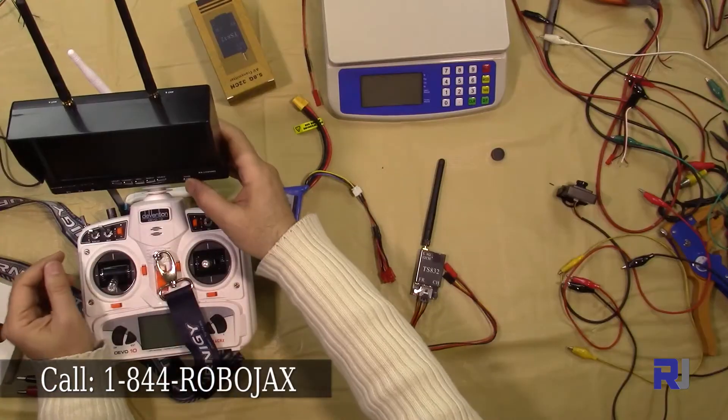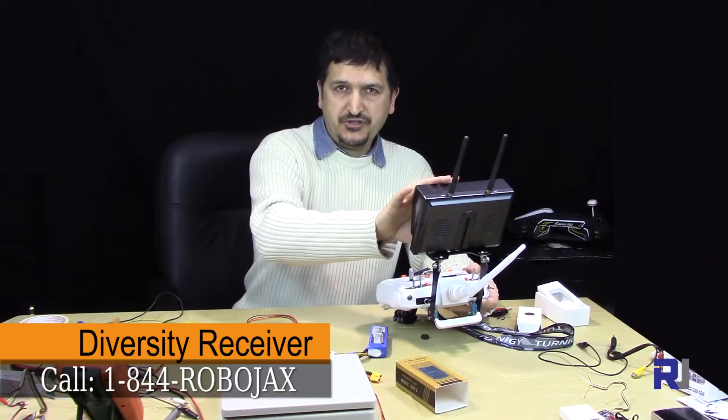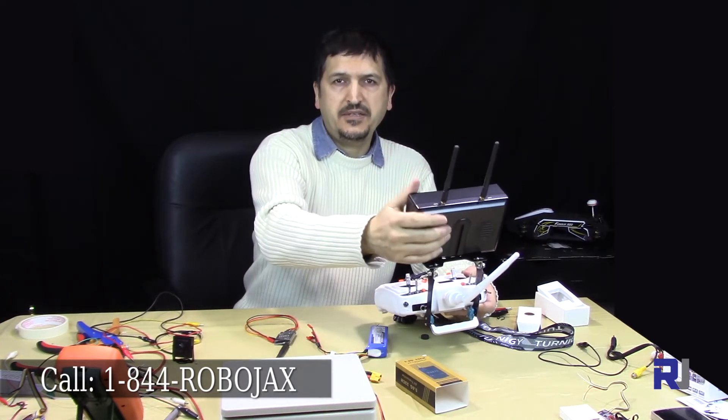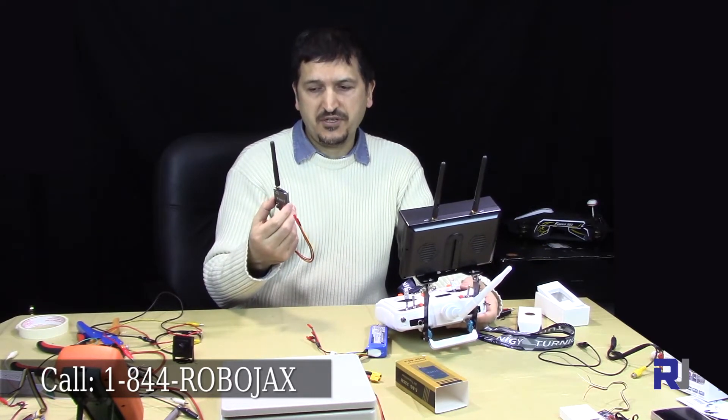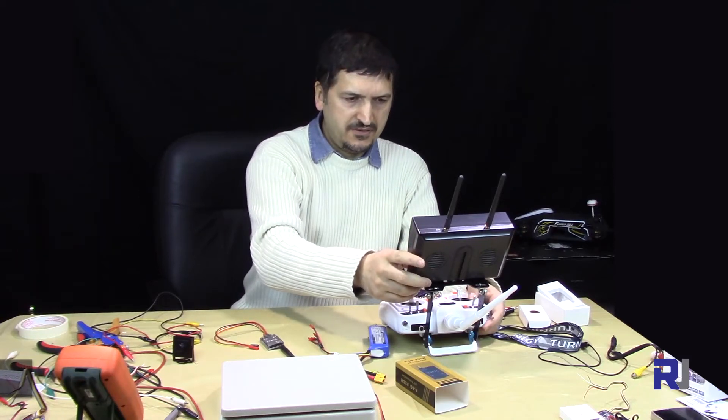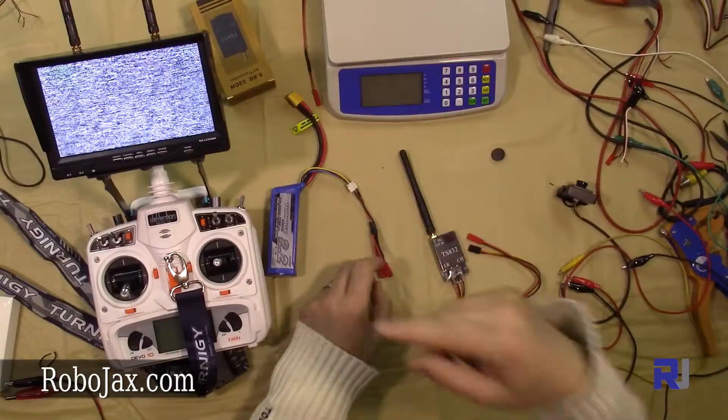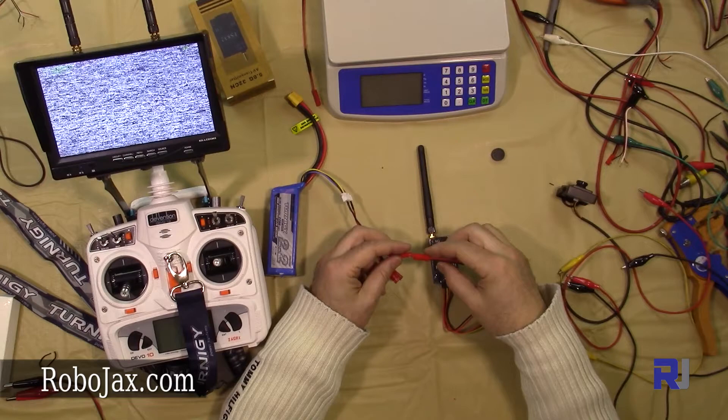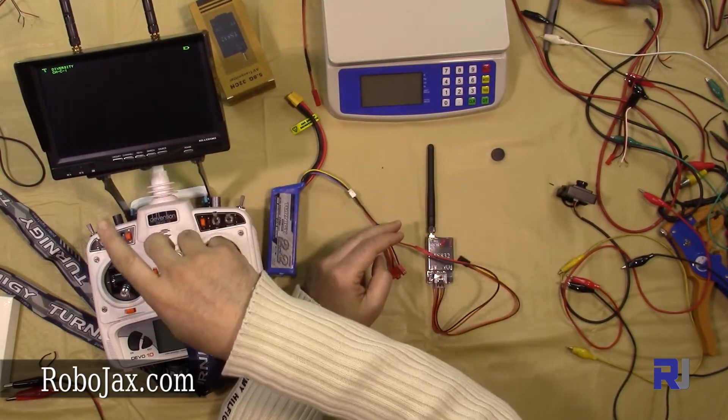I have here a diversity 7-inch LCD monitor with built-in receiver and battery for all your FPV needs. When we send signal from here, we will receive it here. I'm turning it on so you can see it from the top. As soon as I plug this in, we should get some signal. There is signal, but there is no video yet.